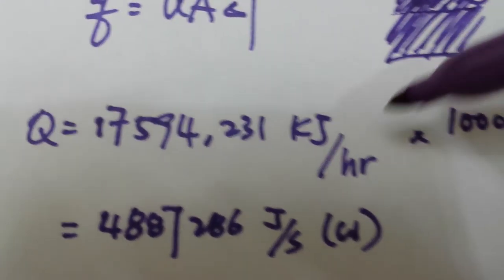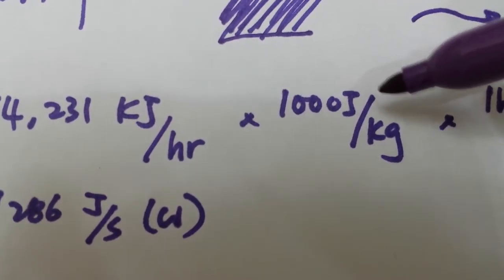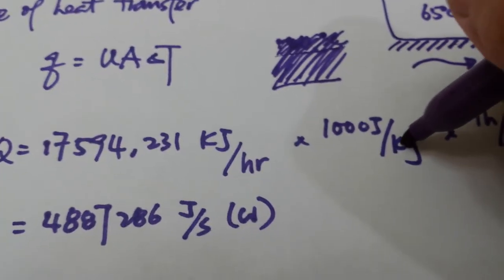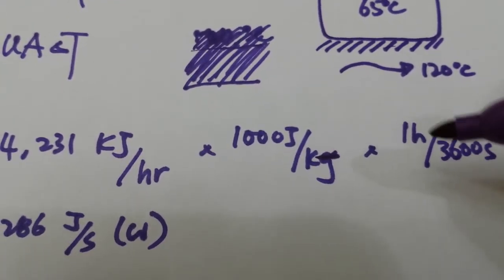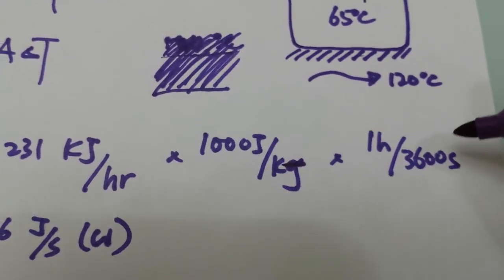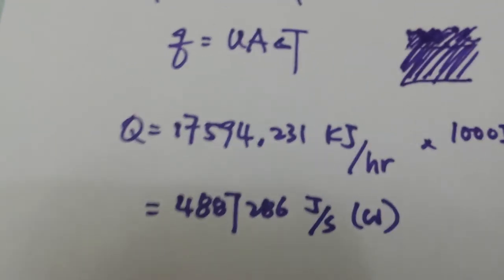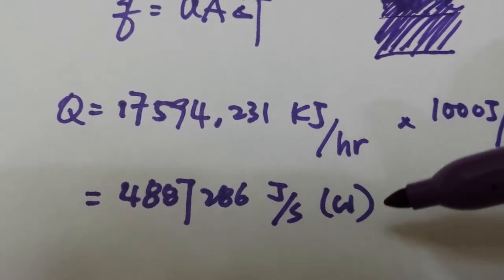And so kilojoules per hour, the way we do it is to multiply it by 1000 joules per kilojoule. Let me try to change this to kilojoules. And then an hour, and what we're doing is a ratio of 3600 seconds. Now we have the rate of heat transfer in joules per second. That's watts.